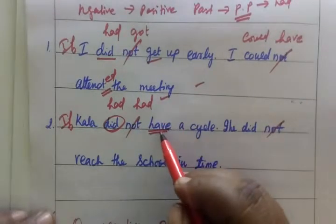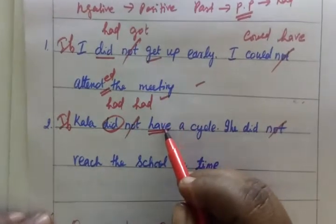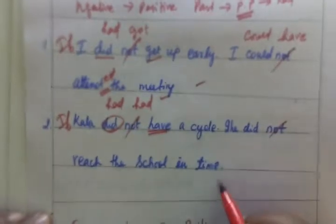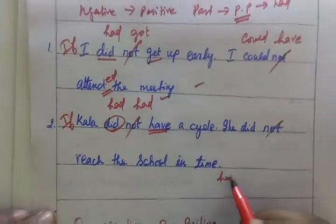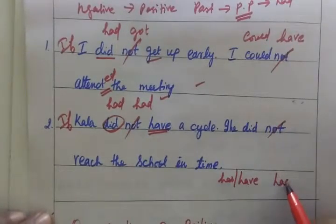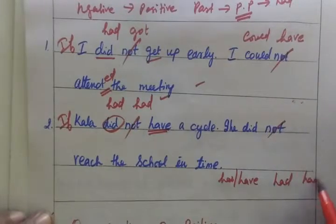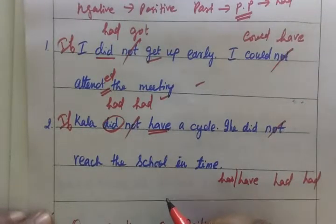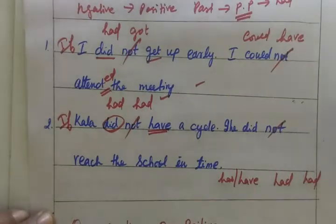Have — third form: had. Has or have — this is the past form: had. Third form: had. Had been.